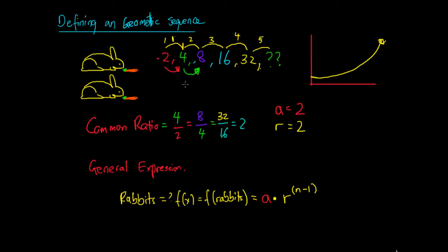So if n is our period number: in the second period when n equals 2, the rabbits have multiplied once; in the third period where n equals 3, the rabbits have multiplied twice — that's n minus 1 times. So n equals 3 minus 1 gives us 2, and n equals 2 minus 1 gives us 1. We can therefore express our general form of a geometric sequence as the initial amount times the common ratio to the power of n minus 1.